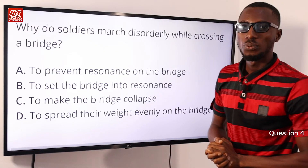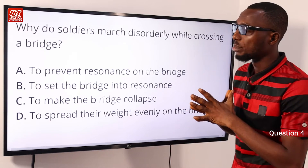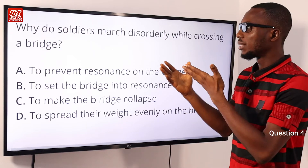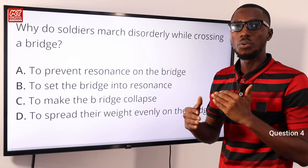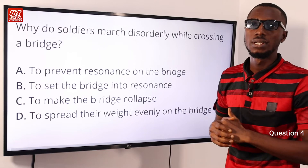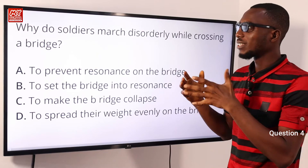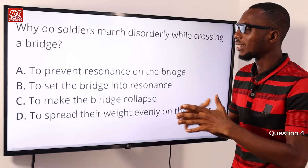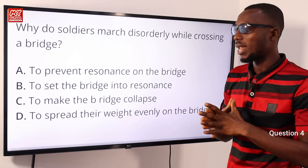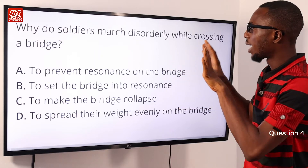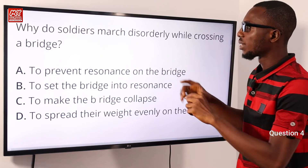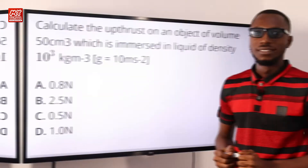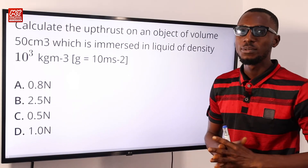Question 4: why do soldiers march out of step when crossing a bridge? This is to avoid resonance. Resonance can lead to the collapse of a bridge once soldiers are marching across. When the frequency gets very close to the bridge's natural frequency, it can produce stronger mechanical resonance, creating vibrations that can make the bridge collapse. The correct option is option A — to prevent resonance.